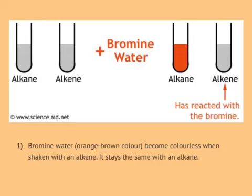But if you add bromine water to an alkene, the alkene reacts with the bromine and decolourises it — it goes colourless. So if asked how to prove you have an alkene or an unsaturated hydrocarbon, you add bromine water, and if it goes colourless or decolourises, you have an alkene.